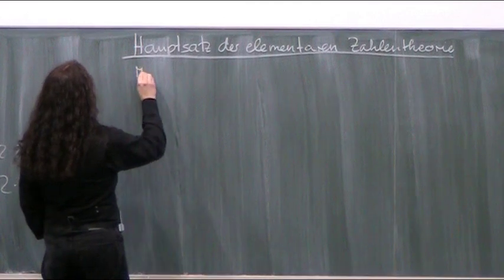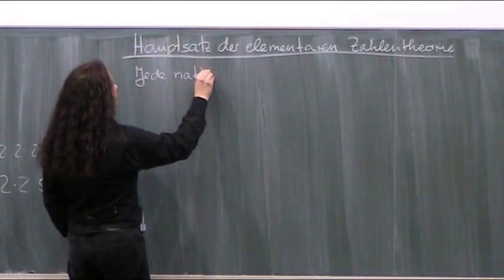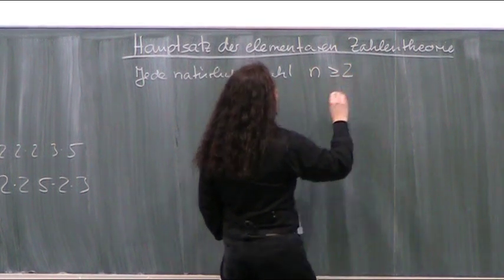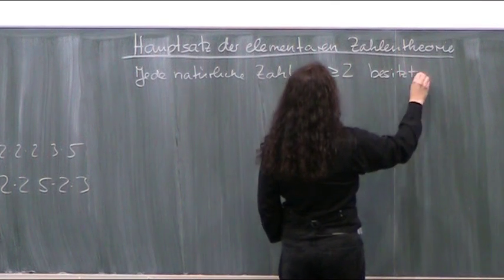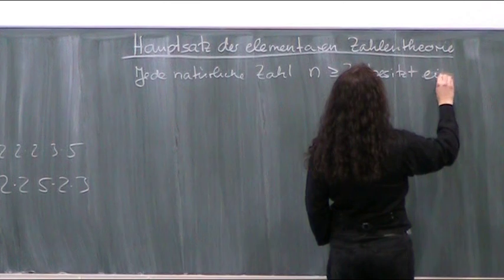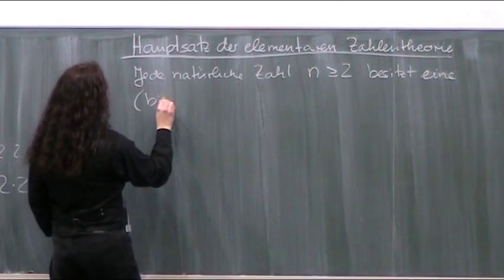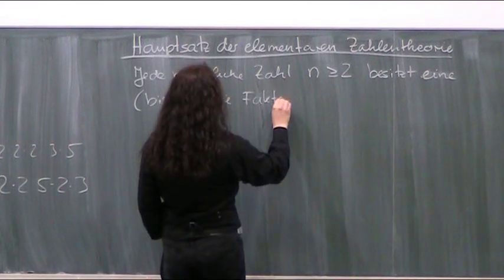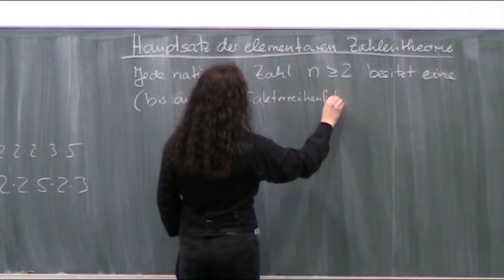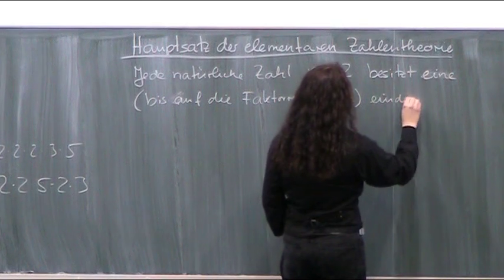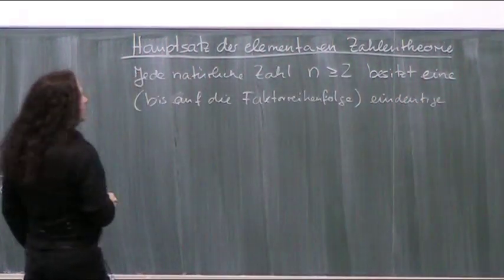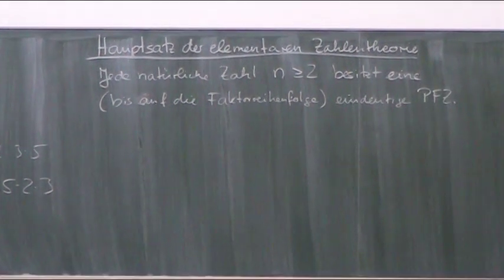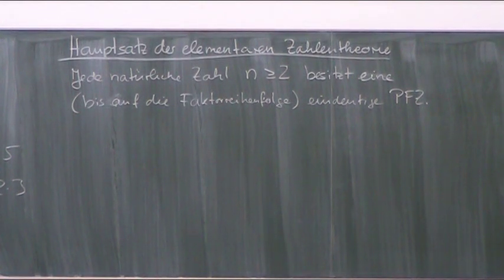Der Hauptsatz der elementaren Zahlentheorie besagt: Jede natürliche Zahl n größer gleich 2 besitzt eine eindeutige – bis auf die Reihenfolge der Faktoren eindeutige – Primfaktorzerlegung. Es gibt nur eine. Highlander: Es kann nur eine geben.